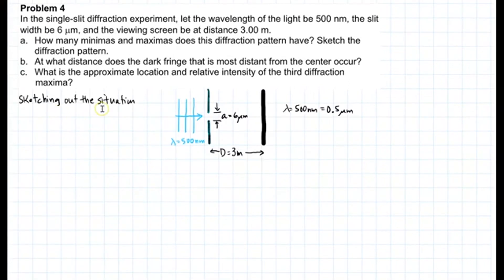Sketching out the situation, I have incoming light which has a wavelength of 500 nanometers. So instead of writing 500 nanometers, I'm going to convert that into microns. 500 nanometers is 0.5 microns. I have a slit width opening of 6 microns and the screen distance is 3 meters.